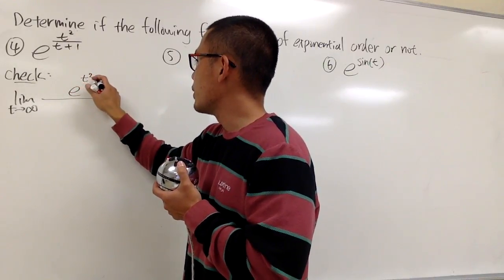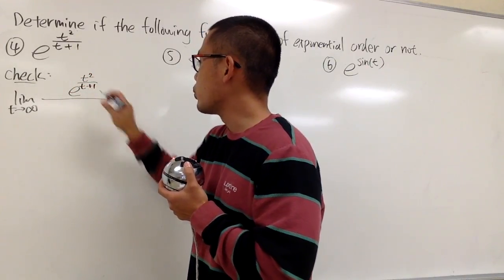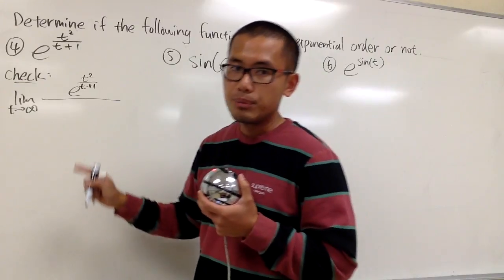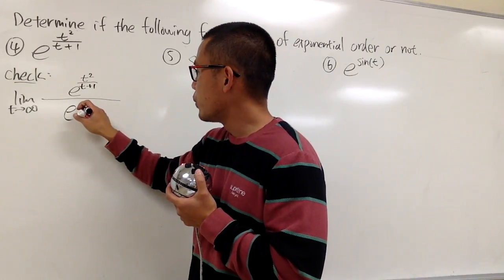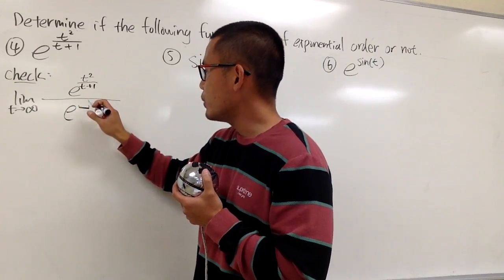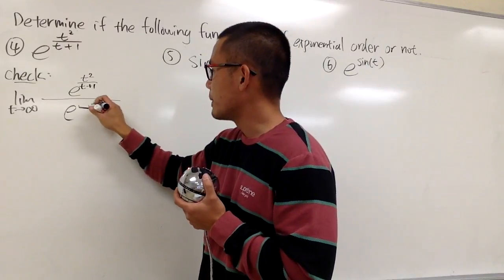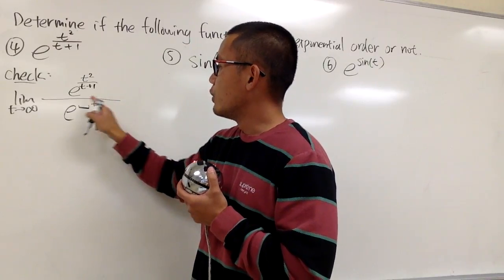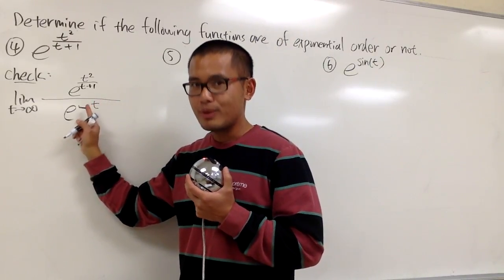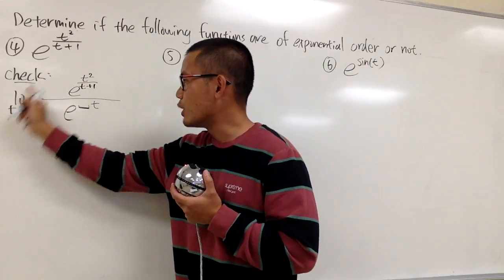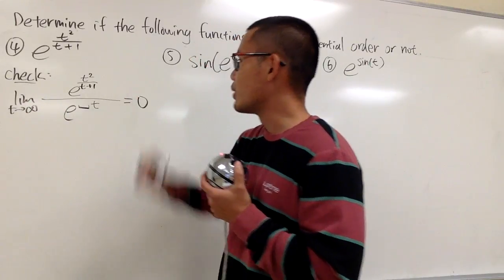We put this on the top: e to the t squared over t plus 1, and we put down e to the whatever number on the bottom, we don't know yet, and then we multiply by t. This is our job — we have to figure out what number to put down so that this limit is going to be 0.